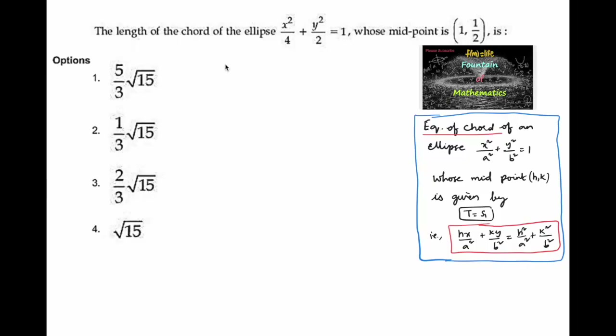We need to find the length of the chord of an ellipse x²/4 + y²/2 = 1, whose midpoint of the chord is given as (1, 1/2).